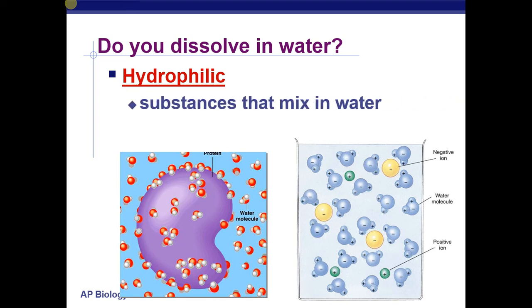So one of the new names that we give for something that dissolves or mixes in water is called hydrophilic, which comes from hydro, which means water, and philic, which means to like or to love. So water loving. Hydrophilic substances are polar. Things that are polar dissolve into polar substances.